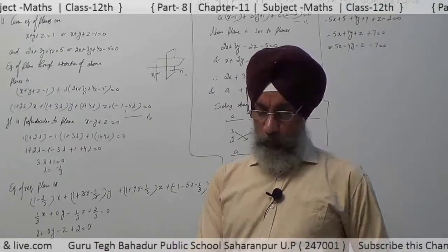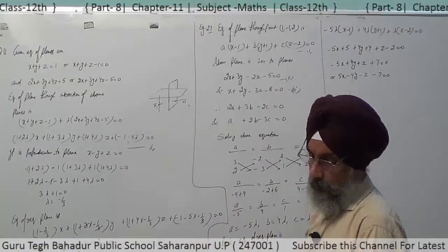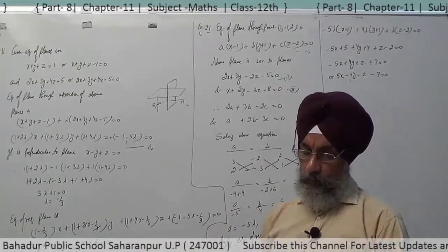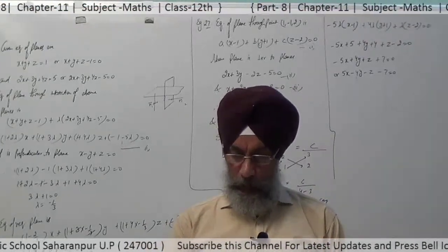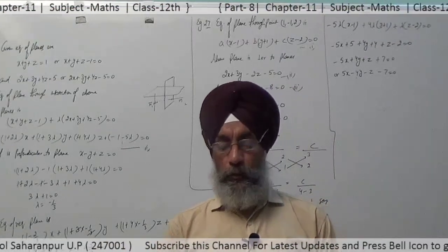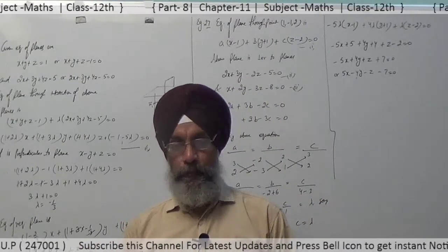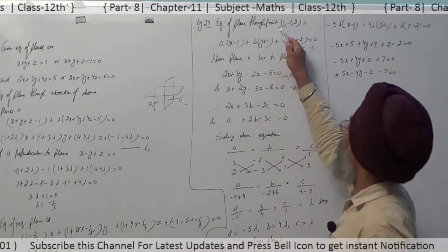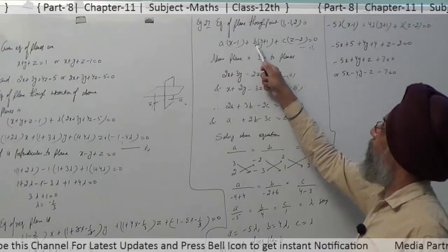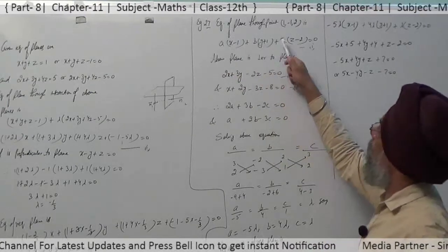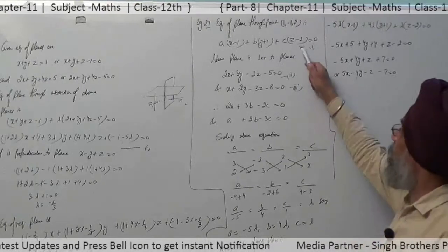Now let us discuss example 27 of the miscellaneous exercise. It says: find the equation of the plane that contains the point (1, -1, 2) and is perpendicular to each of the planes 2x + 3y - 2z = 5 and x + 2y - 3z = 8. The plane passing through the point (1, -1, 2) gives us: a(x - 1) + b(y + 1) + c(z - 2) = 0.